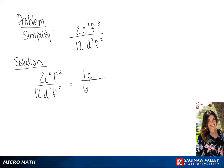We have c squared on the top. And since we have a common base of f, we can subtract those exponents. And in the denominator we have d squared. If we simplify this, we have c squared f all over 6d squared.